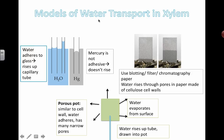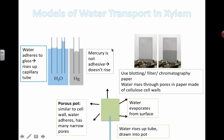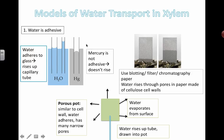Here we're looking at models of water transport. The first one is demonstrating that water is adhesive. If you put thin tubes into water, you're going to see that the water actually starts rising. There's a couple of things at play here — this thing called a meniscus, you've seen this before. You can now explain it in terms of hydrogen bonding and adhesion of the water molecules with the actual capillary tubing inside.